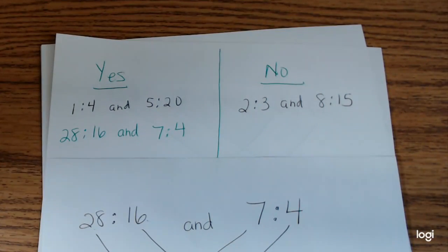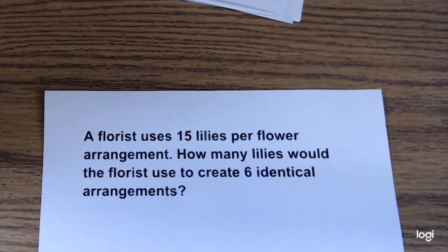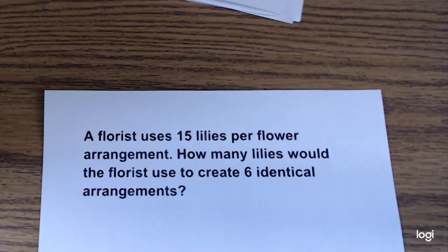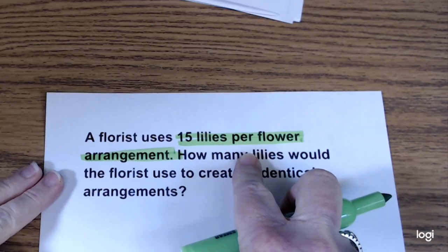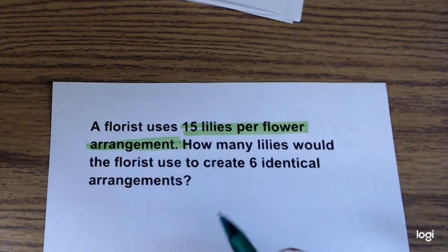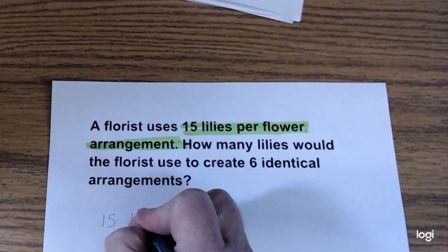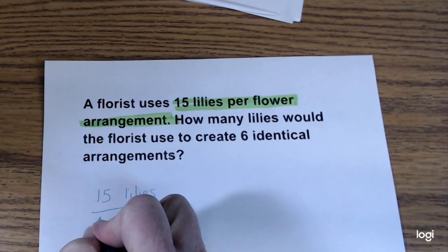You're going to have to do something like this today as well — finding equivalent ratios, telling me yes or no. The last thing we're going to do is a story problem. The story says: a florist uses 15 lilies per flower arrangement — how many lilies would the florist use to create 6 identical arrangements? I have to find my ratio. The ratio says 15 lilies per flower arrangement. I have to know what per means — per means one, so my ratio is 15 lilies to 1 arrangement.